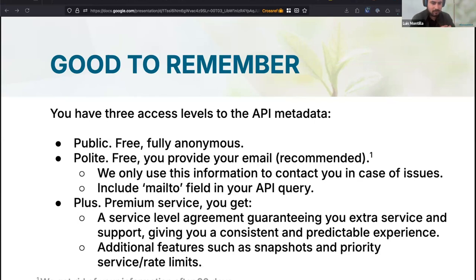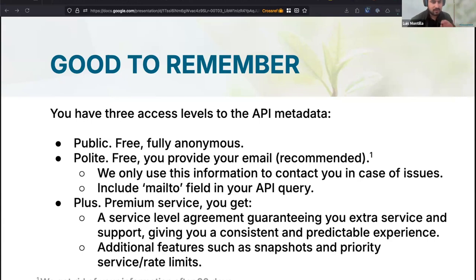You can include this information in the header of your queries, or as the mailto parameter. There is also the plus level of access, which is a premium service offering extra quality of service and additional support — a more consistent and predictable experience — with features such as monthly snapshots, priority service rates, and higher rate limits. However, everything I will describe here is easily applied to the free public version of the API.